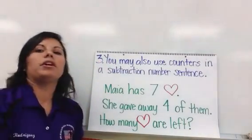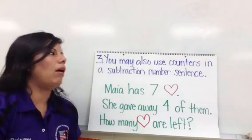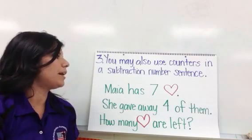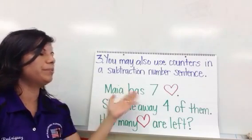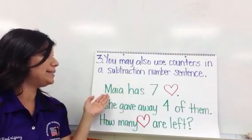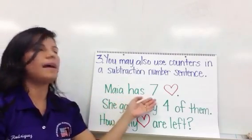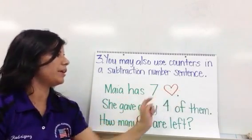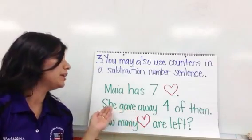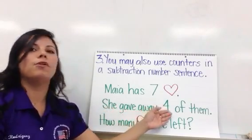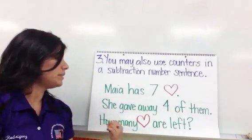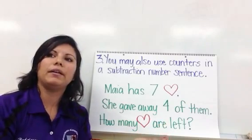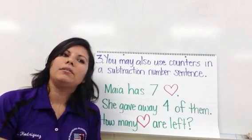The third method states: you may also use counters in a subtraction number sentence. Here is an example using a counter. It states: Maya has 7 hearts — this would be the picture, the counter that you would use for subtraction. She gave away 4 of her hearts. How many hearts are left? So you put it in your mind,